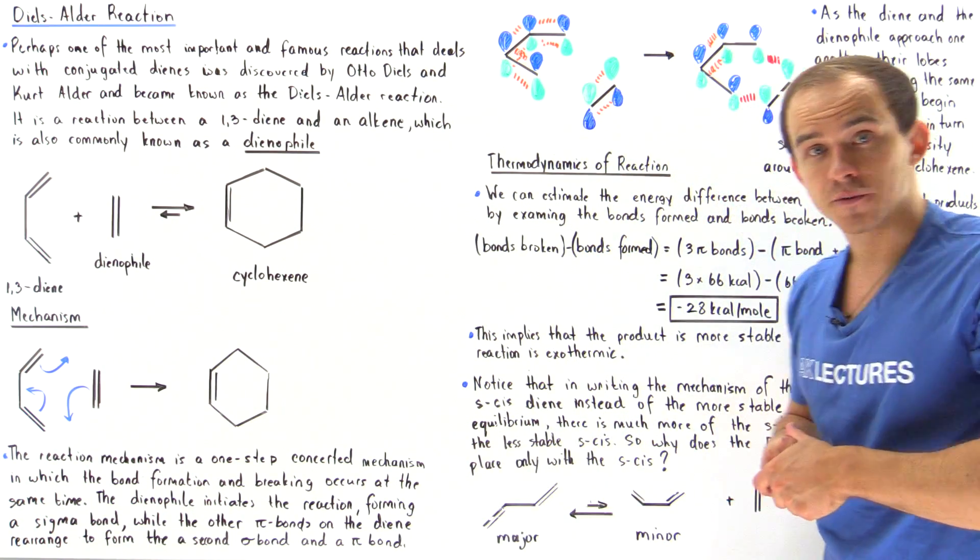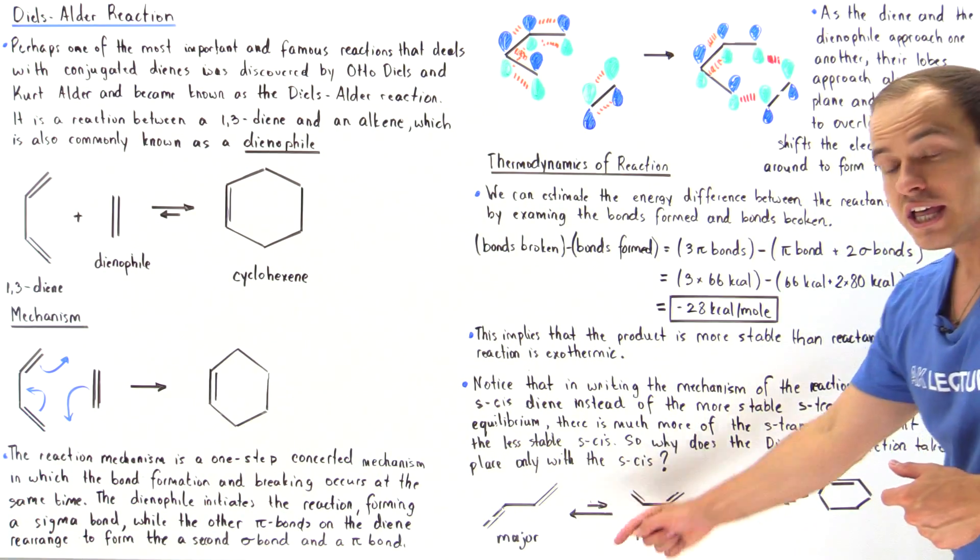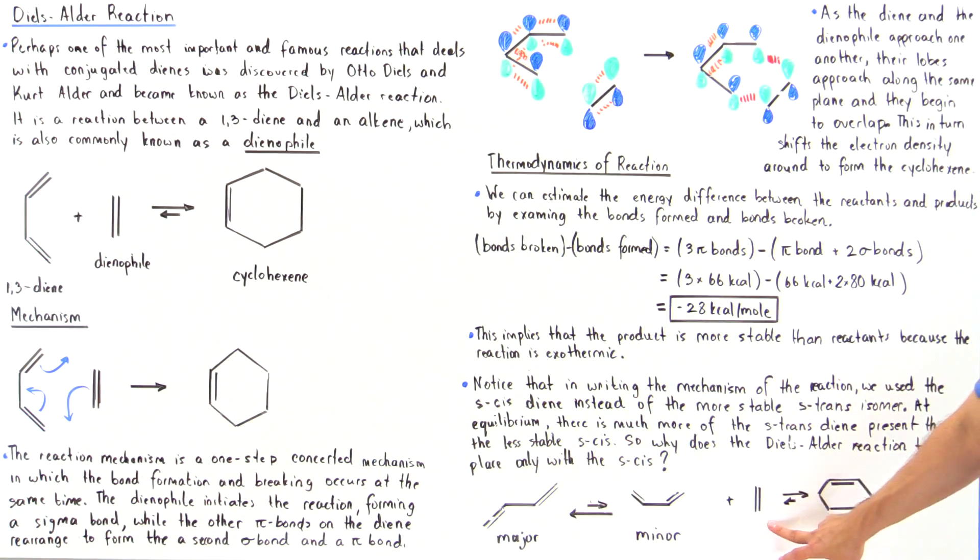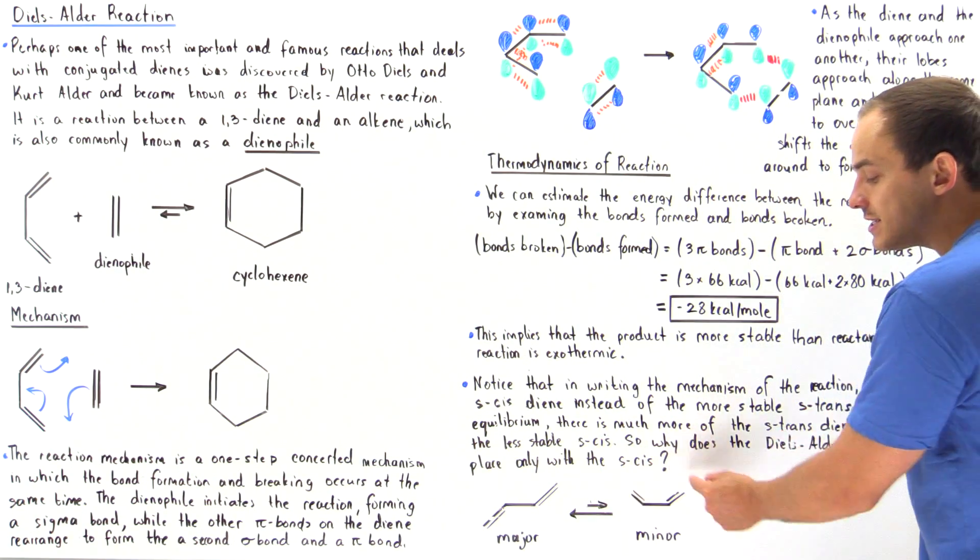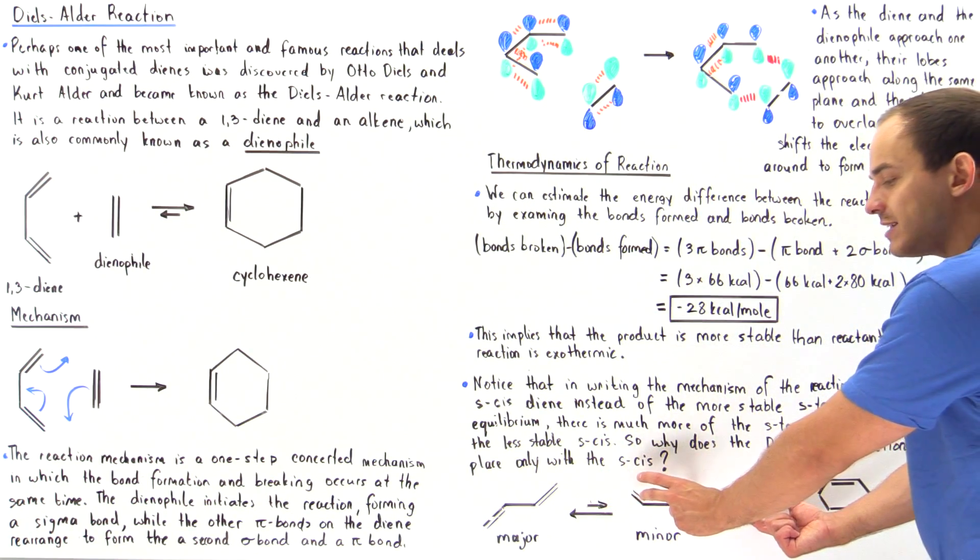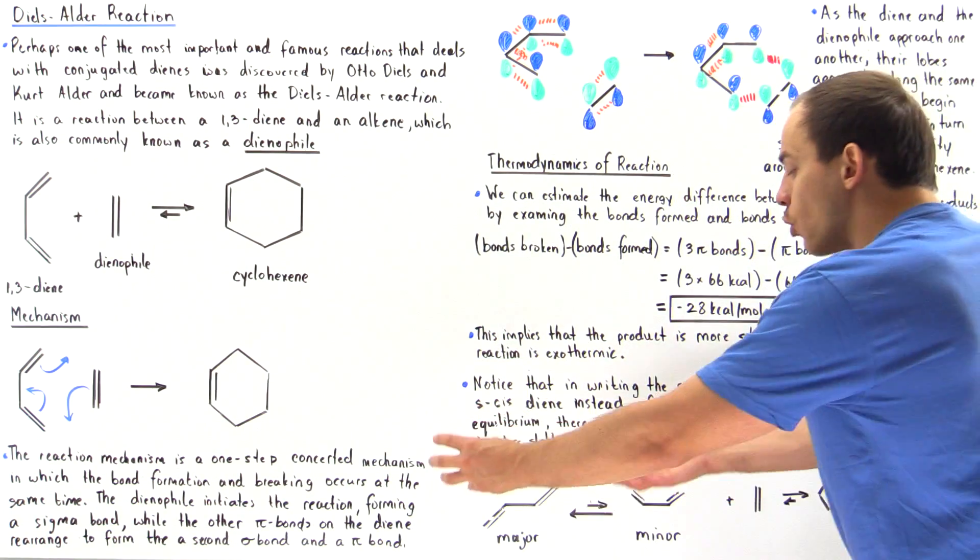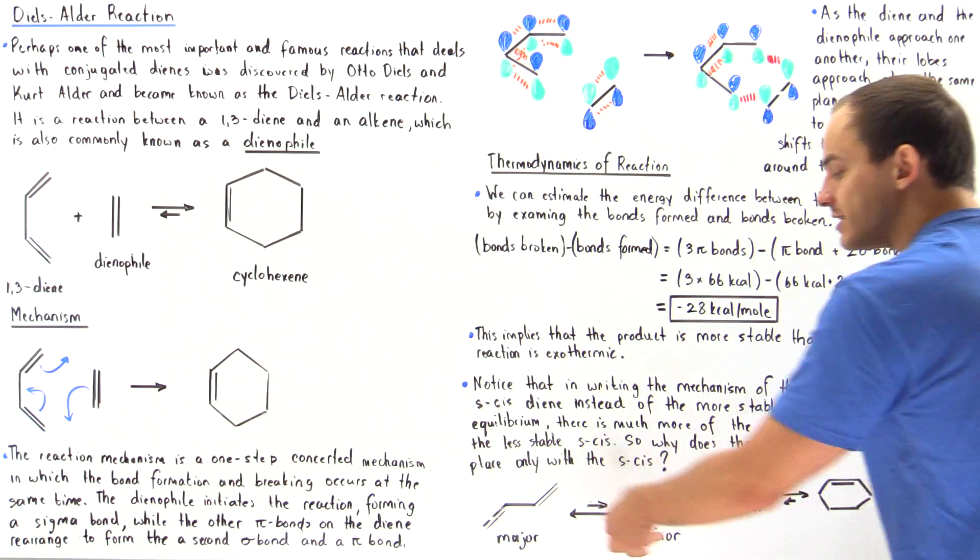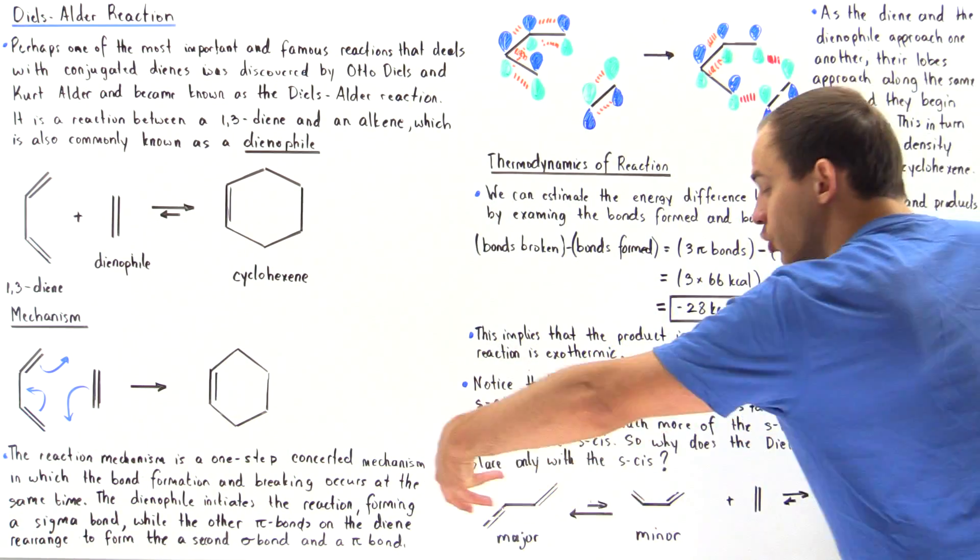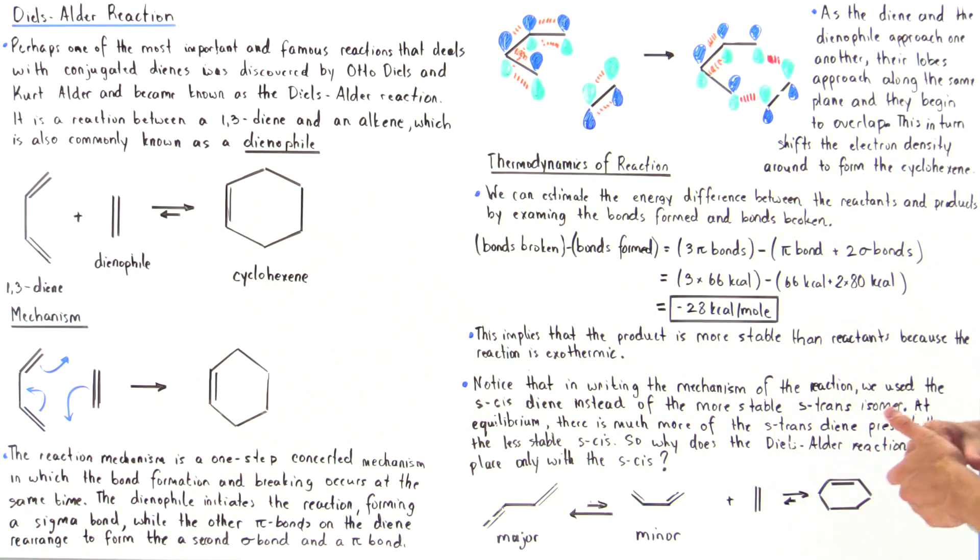even though we have very little of this, it's enough to actually interact with the alkene to form our cyclohexene. In fact, by Le Chatelier's principle, as this is depleted, as this reacts with the alkene, Le Chatelier's principle will tell us that in order to decrease the stress, in order to increase this quantity, this will shift to the right. And so we will produce more of our minor s-cis isomer.